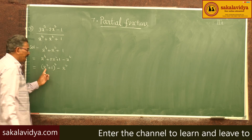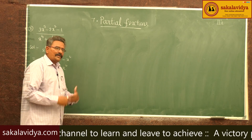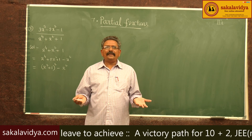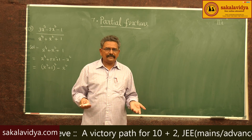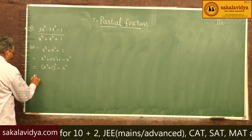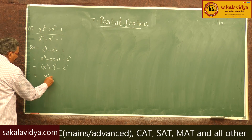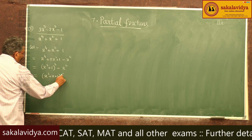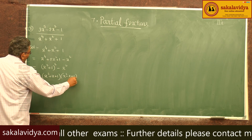This is the a² - b² form. a² - b² factors as (a - b)(a + b), so we get (x² + x + 1)(x² - x + 1).